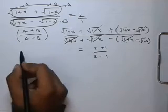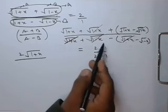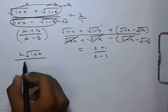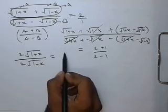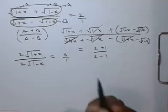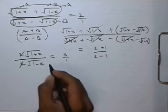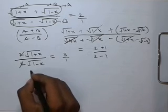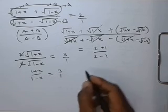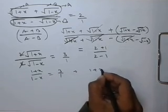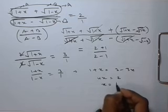So on the upper side we get 2√(1+x) and in the denominator we get 2√(1-x). On the right side we get 3/1. Now this can be solved by squaring both sides: (1+x)/(1-x) = 9/1. That gives 1 + x = 9 - 9x, so 10x = 8, meaning x = 4/5.